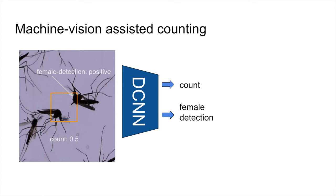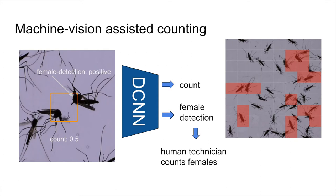The basic approach is to cut up the image into patches that feed into a convolutional neural network, which predicts a per-patch mosquito count as well as the probability that the patch contains a part of a female mosquito. The counts are summed over all patches, and female detections are reviewed by a technician, who will update a tally of female contaminations if appropriate.